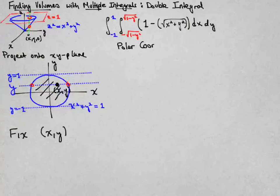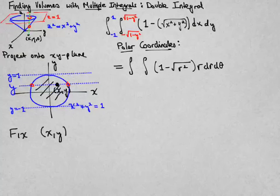This is probably most naturally done in polar coordinates, so why don't we convert to polar coordinates and actually do the calculation. I have 1 minus, well, x squared plus y squared is r squared, and because I'm converting to polar coordinates, now I have r, and then dr d theta.